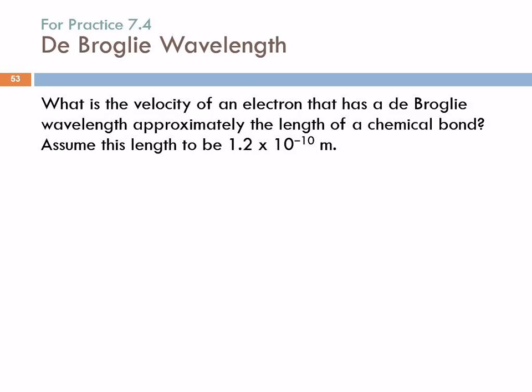Using that relation, we can calculate the wavelength of particles. What's the velocity of an electron that has a de Broglie wavelength approximately the length of a chemical bond? Let's assume this length to be 1.2 × 10⁻¹⁰ meters. So the wavelength is 1.2 × 10⁻¹⁰ meters, and we want to find the velocity.